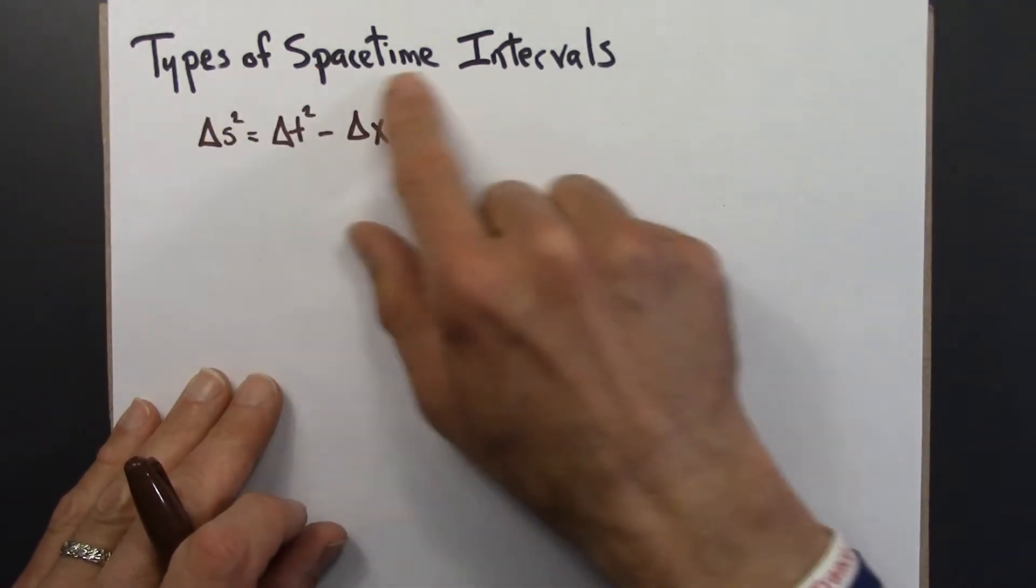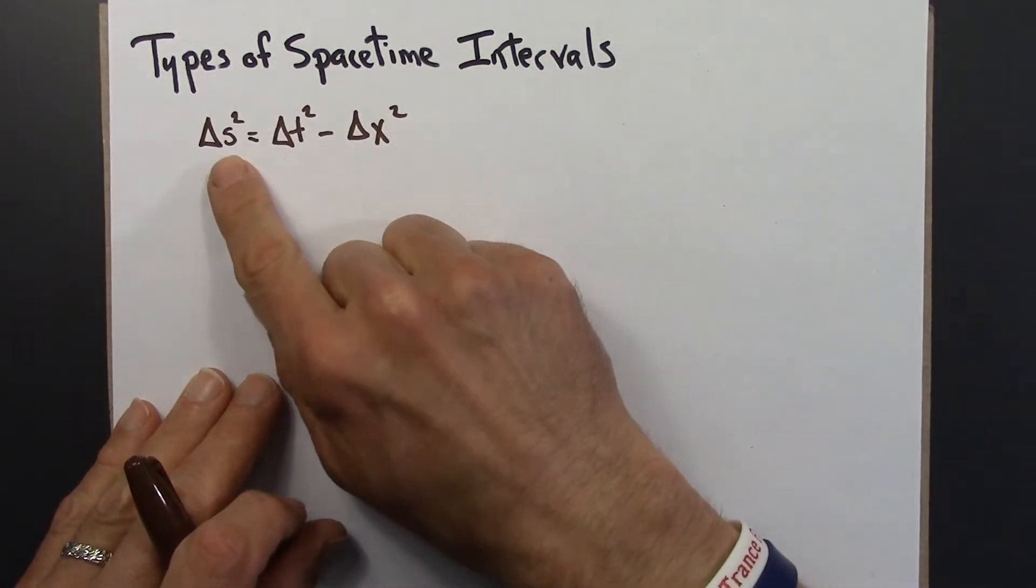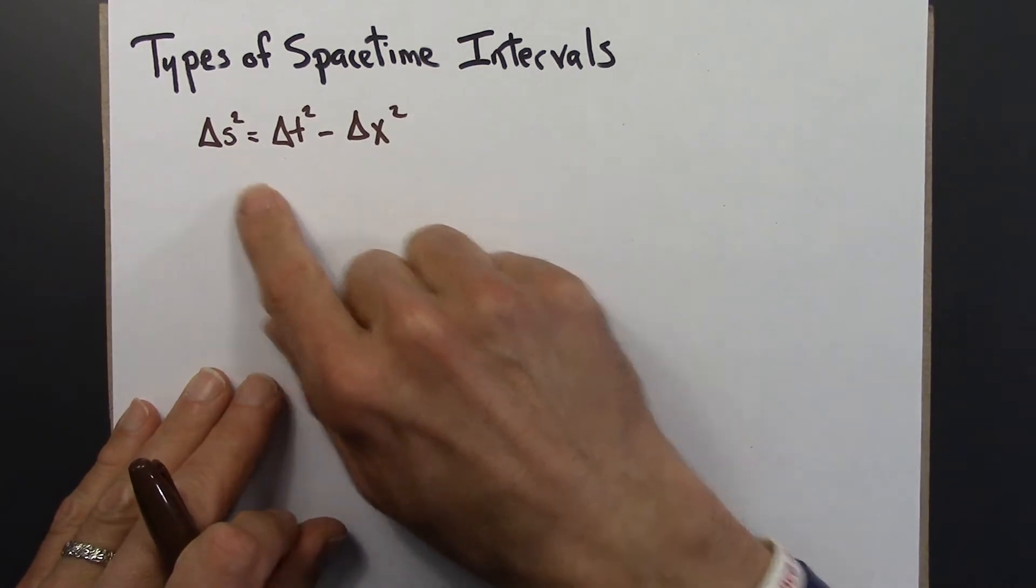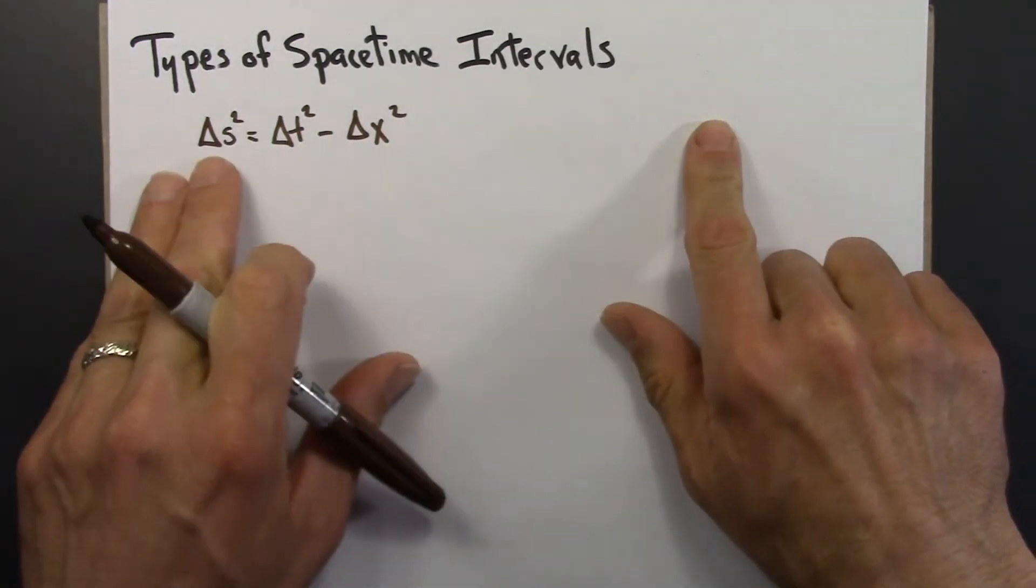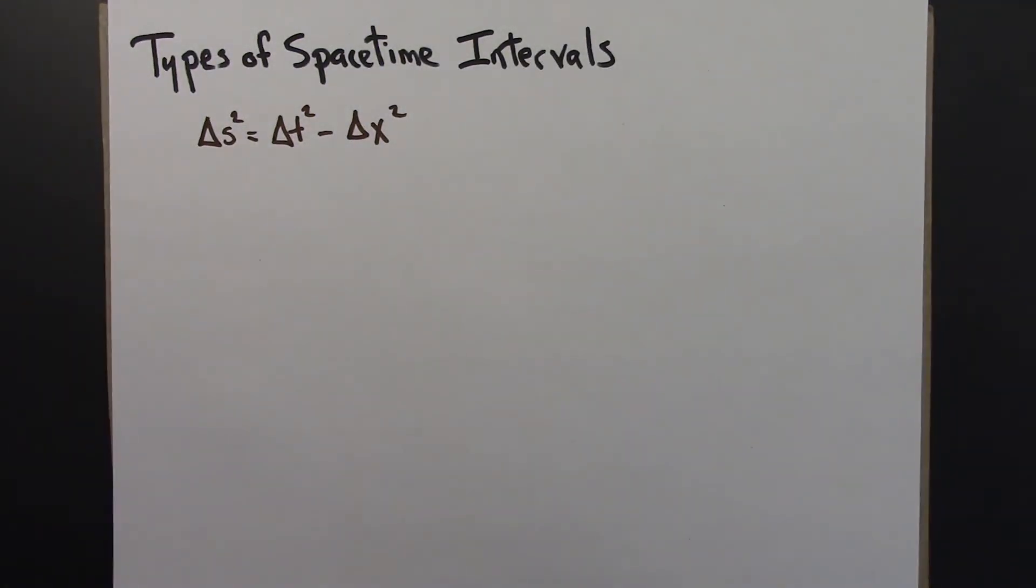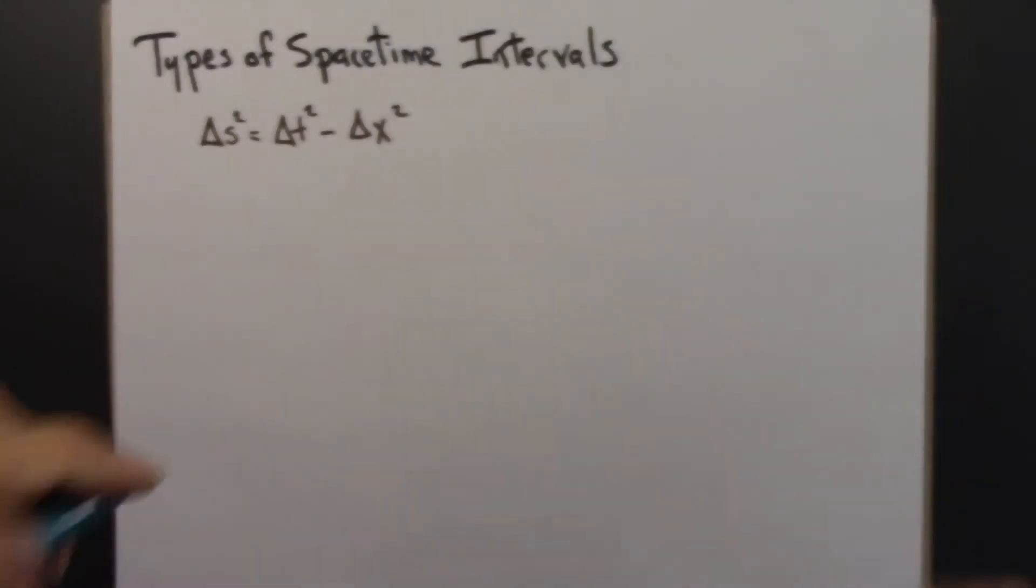So what do I mean by types of space-time intervals? There's just one formula for it. What do I mean by different types? Well, for just a moment, let's go back and think about space and not space-time. Maybe I'll use a different color for that.